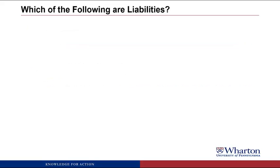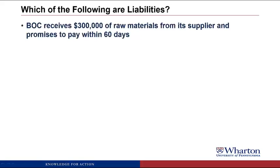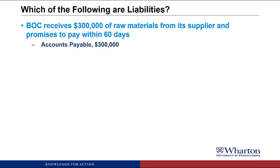Let's apply these criteria to liabilities. BOC receives $300,000 of raw materials from its supplier and promises to pay within 60 days. This would be a liability — we received the raw materials, got the benefit, creating an obligation to pay $300,000 as shown on the invoice. We're going to call this liability accounts payable. We always use that term when we owe money to suppliers, and the amount is $300,000.